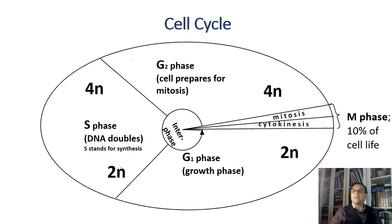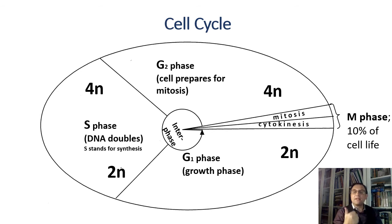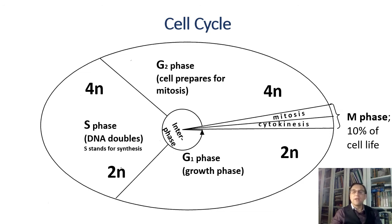The cell cycle is traditionally divided into four phases: M phase, G1 phase, S phase, and G2 phase. M stands for mitosis, including cell division. S stands for synthesis of DNA. G1 and G2 stand for Gap 1 and Gap 2, respectively. The remaining three phases — G1, S, and G2 — are collectively called interphase.